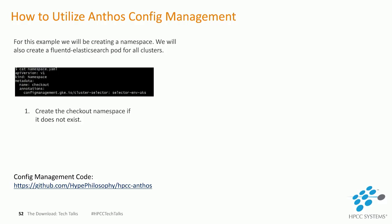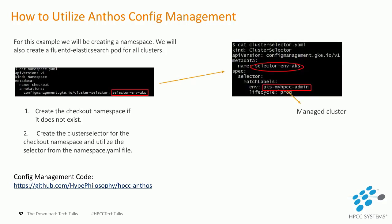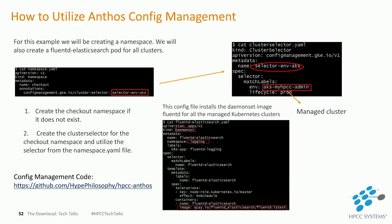On this slide, we will be creating an example namespace and adding FluentD Elasticsearch to all clusters. The code for the HPCC Config Management is also inside the Links and Attachments folder. Step 1: create the namespace if it does not exist. Step 2: create the cluster selector for the checkout namespace and utilize the selector from the namespace.yaml file — and that's all it takes to create a new namespace. This config file then installs a DaemonSet image FluentD for all managed Kubernetes clusters, so every time Kubernetes nodes scale up, each new node will contain a FluentD Elasticsearch pod.